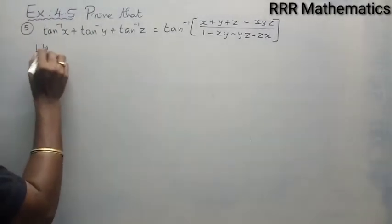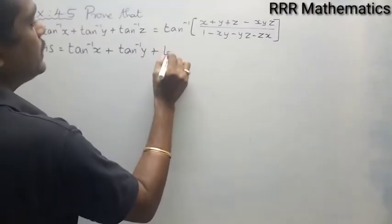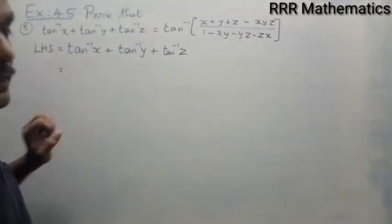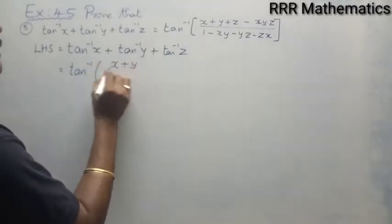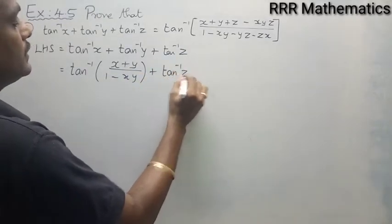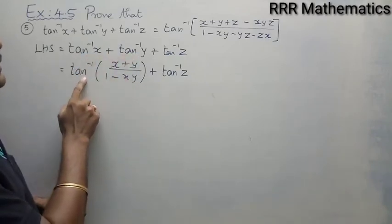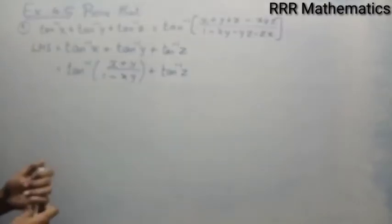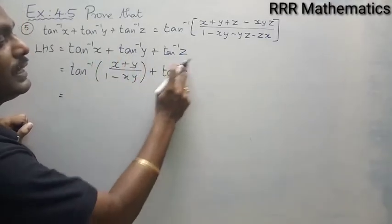My left hand side is tan inverse x plus tan inverse y plus tan inverse z. We have a formula: tan inverse x plus tan inverse y equals tan inverse of (x plus y) divided by (1 minus xy), plus the third term tan inverse z.